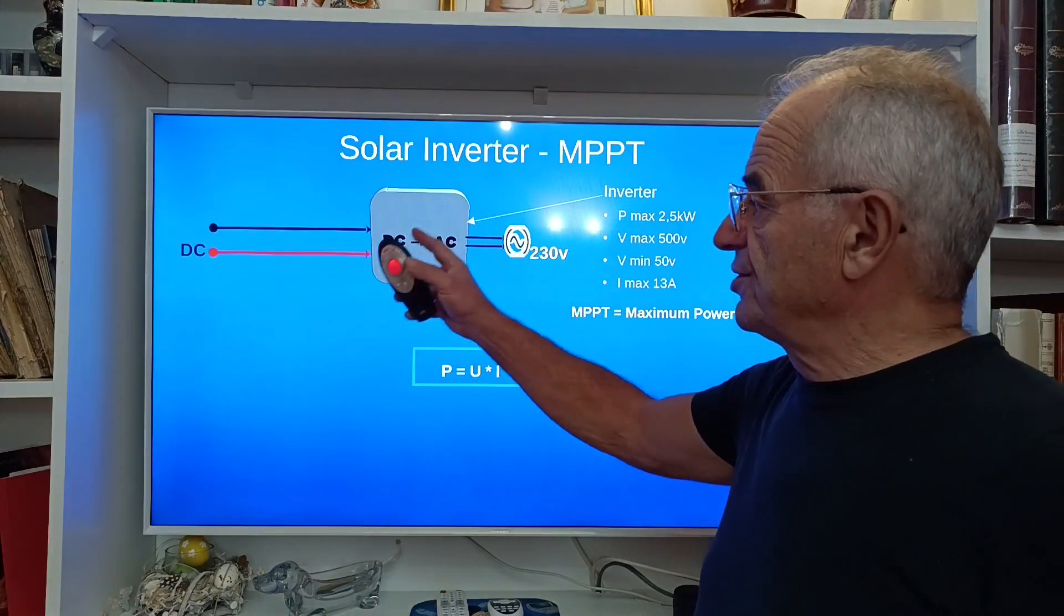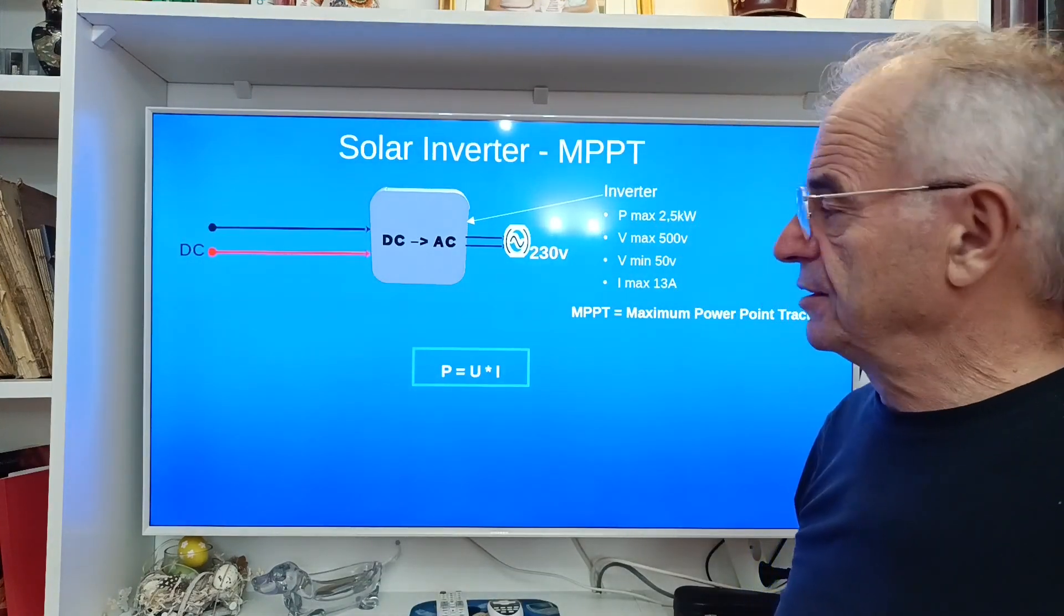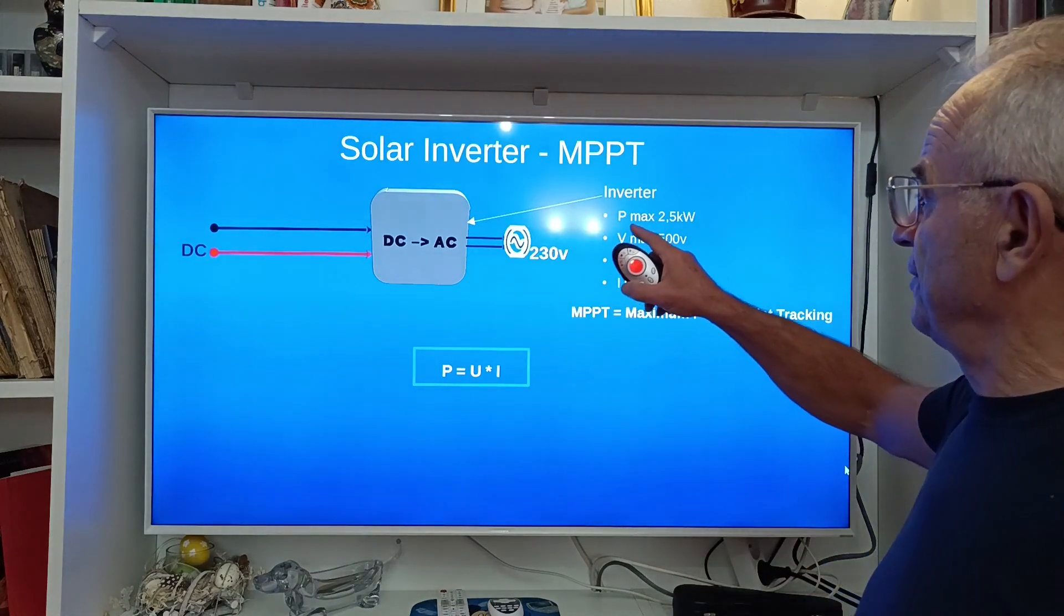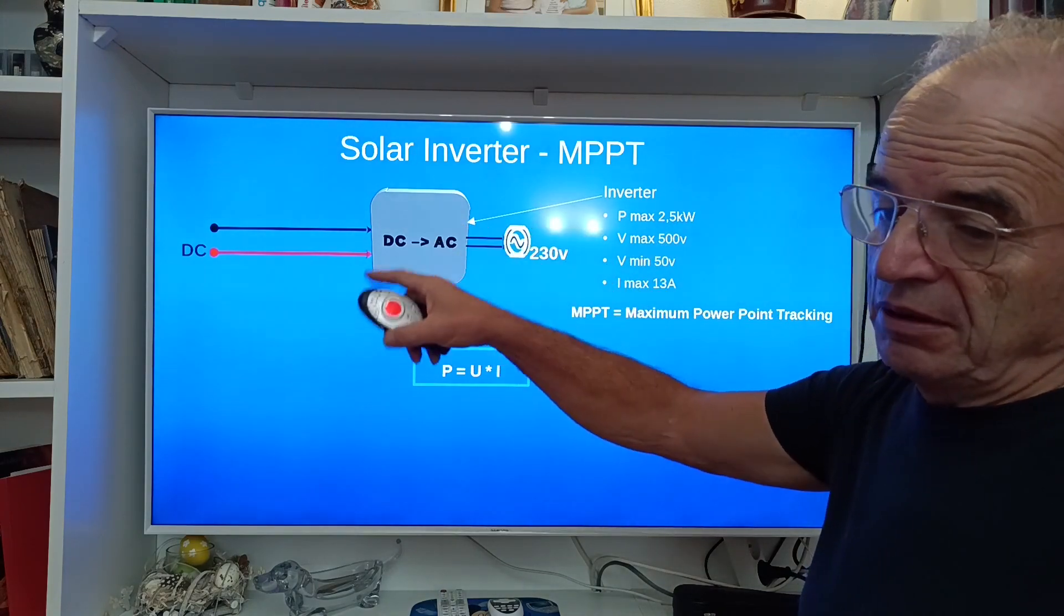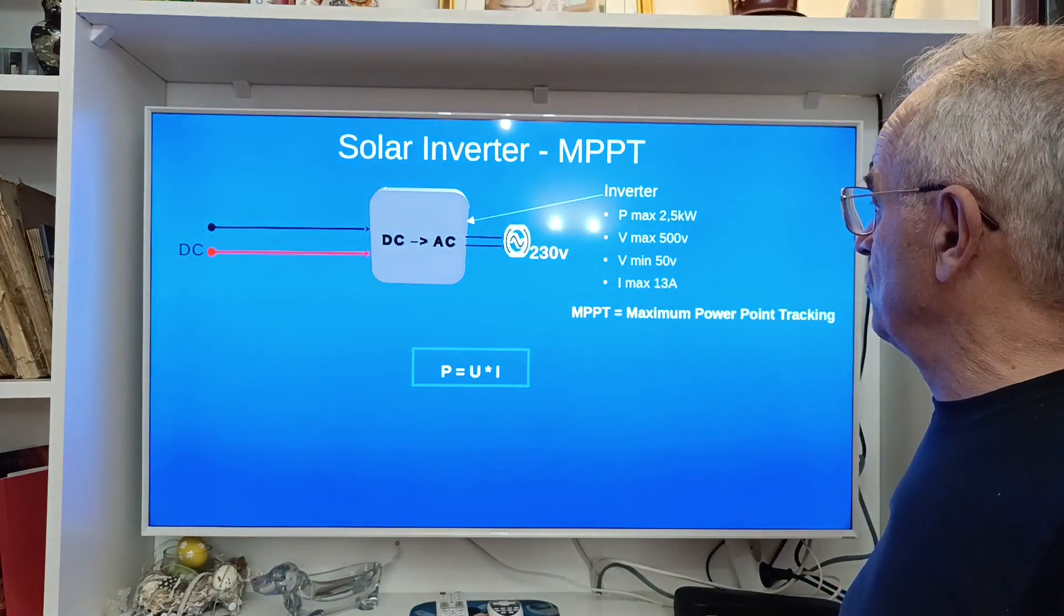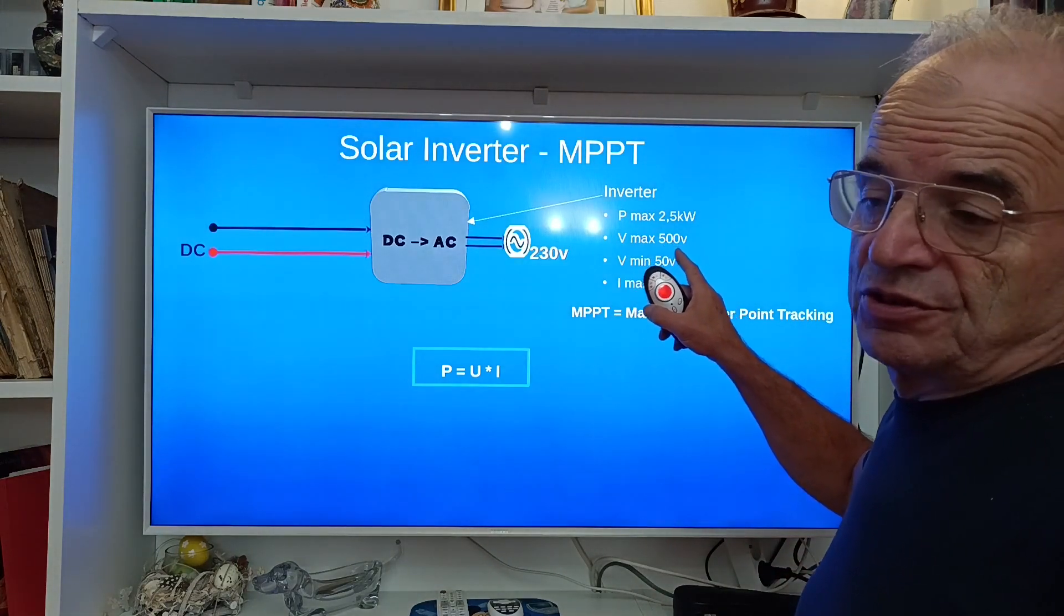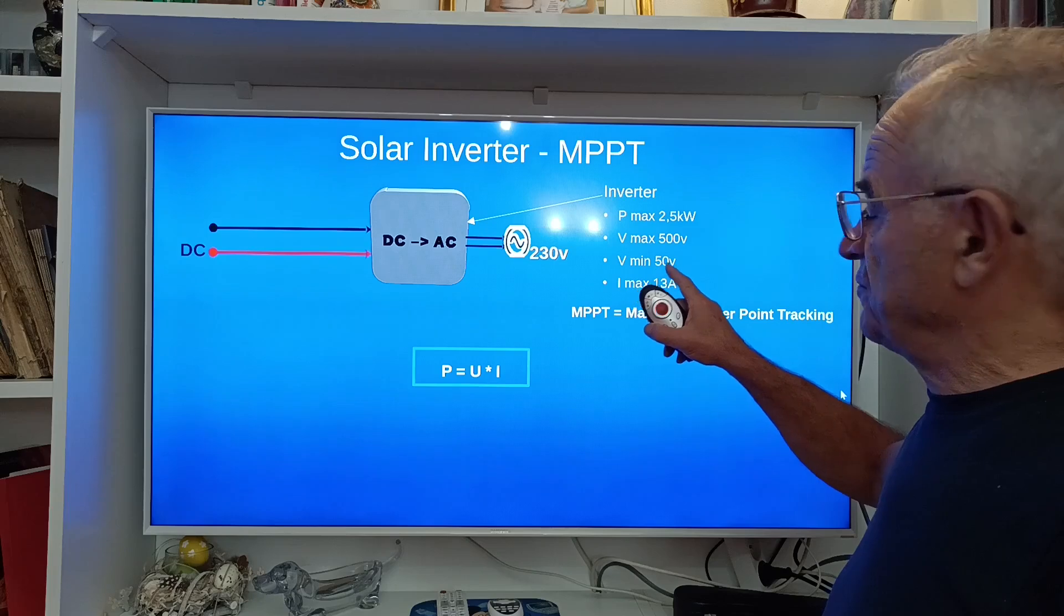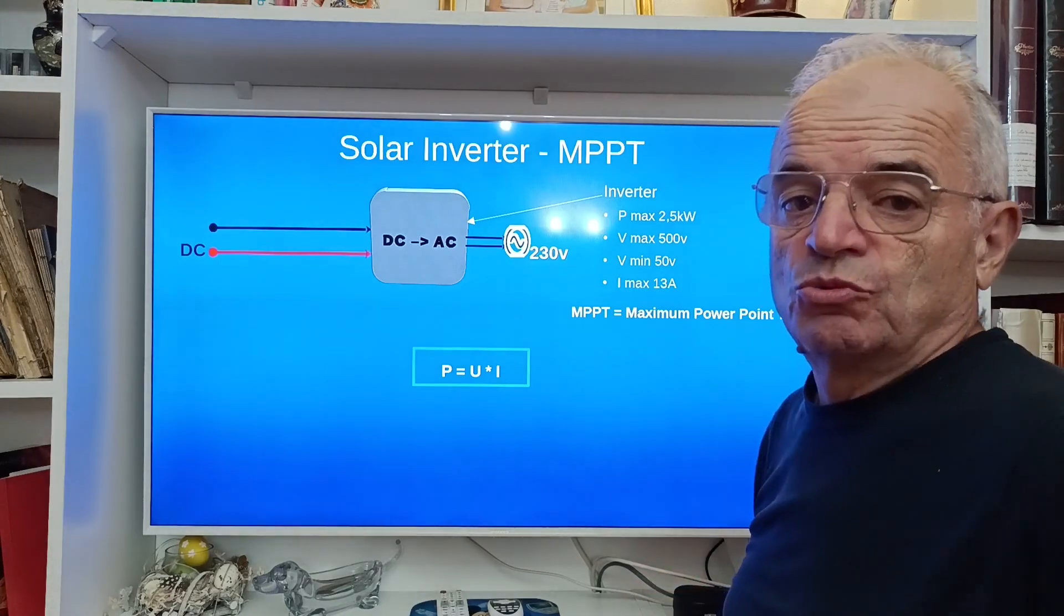The inverter receives DC current on the left, so we need an inverter with maximum power for example of 2.5 kilowatts. Here we have about 2.3 kilowatt at the input, so the inverter is able to manage 2.5 kilowatts, that's good enough. Maximum voltage 500 volts, we see that we will have maximum of 240 so it's okay. Minimum voltage 50 volts. You have to know that the inverter requires a minimum of voltage to work properly.